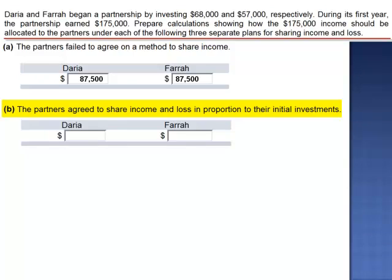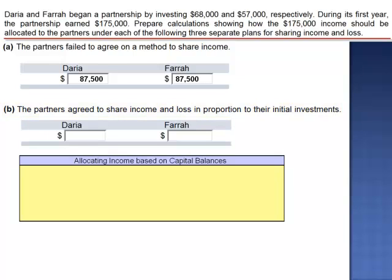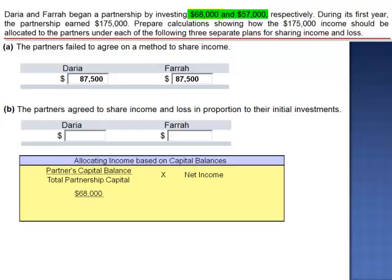Letter B: the partners agreed to share income and loss in proportion to their initial investments. To calculate the proportion, we take each partner's capital balance and divide by total partnership capital, then multiply by net income. For Daria, the initial investment of $68,000 divided by the sum of $68,000 plus $57,000, multiplied by net income of $175,000 — Daria's share of net income is $95,200.